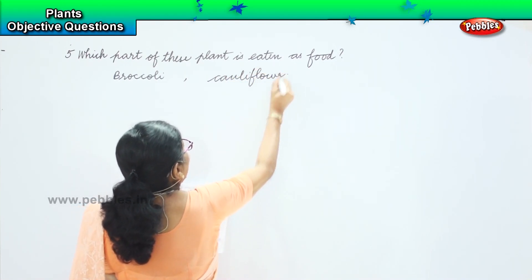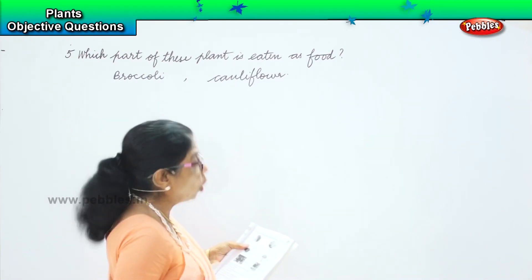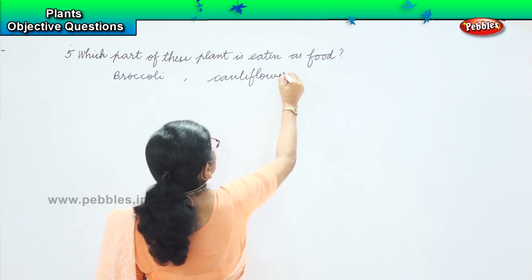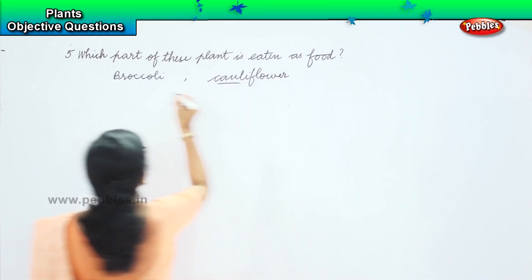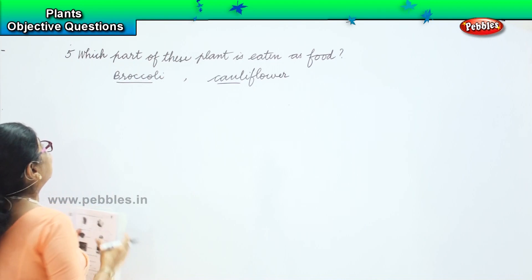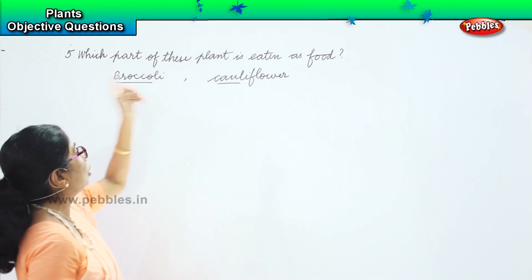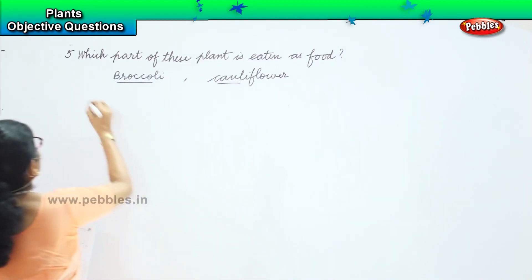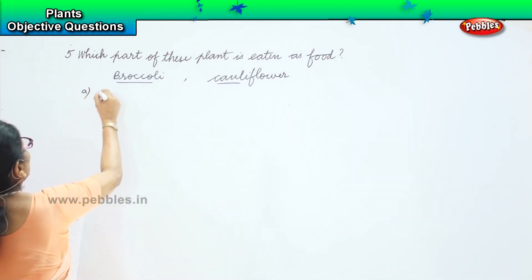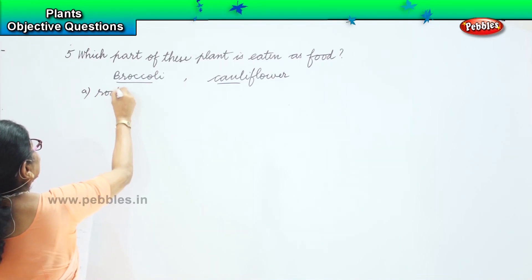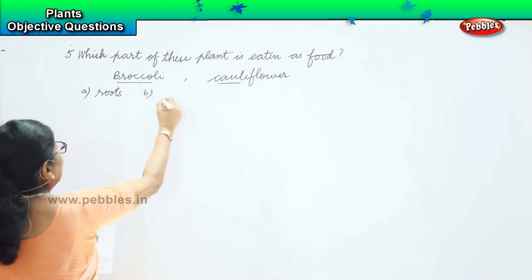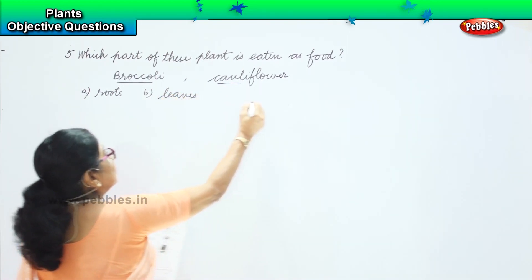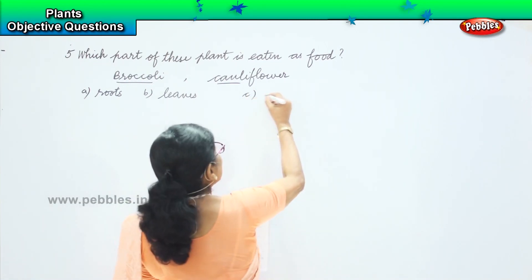We have broccoli and cauliflower. The question is: which part of these plants — broccoli and cauliflower — is eaten as food? Your options are: option A, roots; option B, leaves; option C, stems.